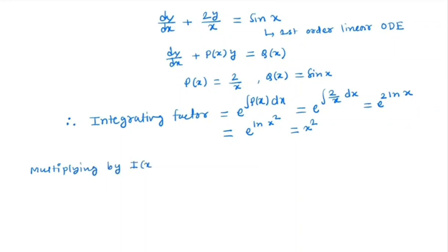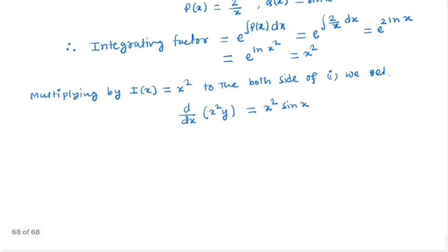Then multiplying by the integrating factor, which is x squared, to both sides of equation 1, we get d/dx of x squared times y equals x squared sin x.